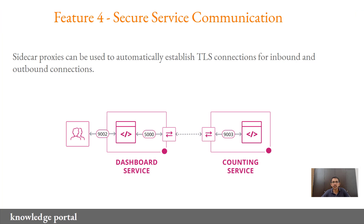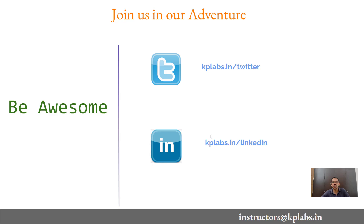The fourth feature is secure service communication, where sidecar proxies are used to automatically establish a TLS connection for both inbound and outbound traffic. For example, there are two services — dashboard and counting — that both want to communicate with each other in a secure way. Rather than modifying each service and adding related configurations, you can make use of secure service communication where additional sidecar proxies ensure that the communication between both of them is end-to-end encrypted. This is a very interesting feature and we'll be discussing it in great detail in the upcoming videos. In the upcoming section we'll be discussing these four features in great detail along with additional aspects of Consul related to high availability, fault tolerance, Consul enterprise, and so on.